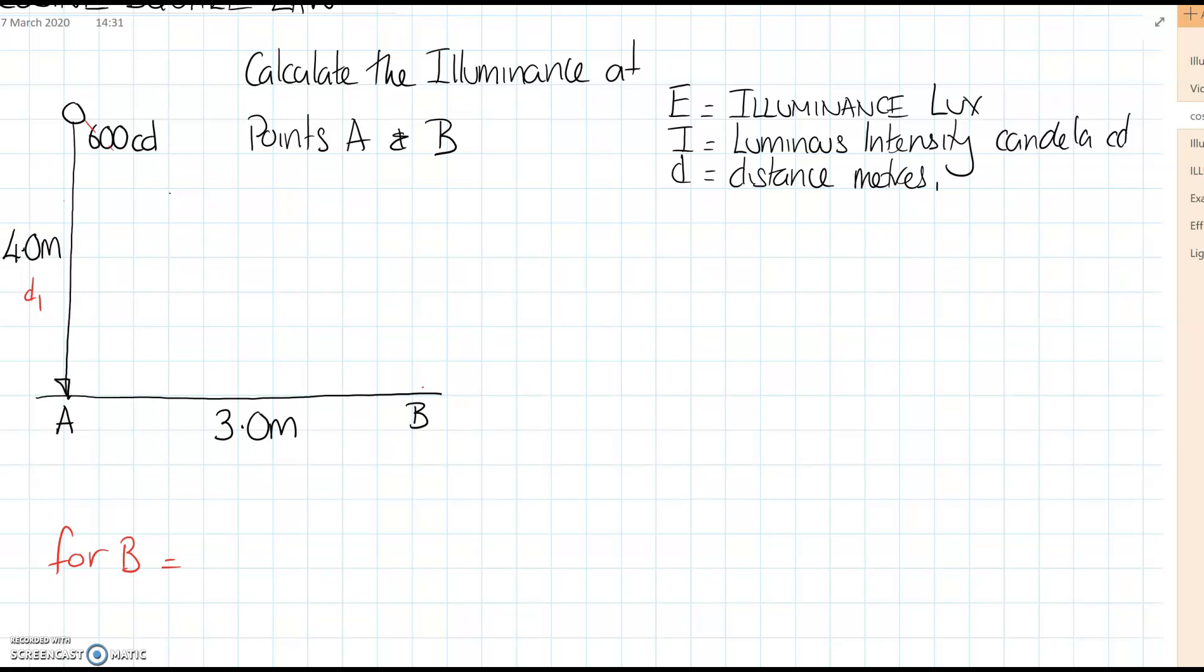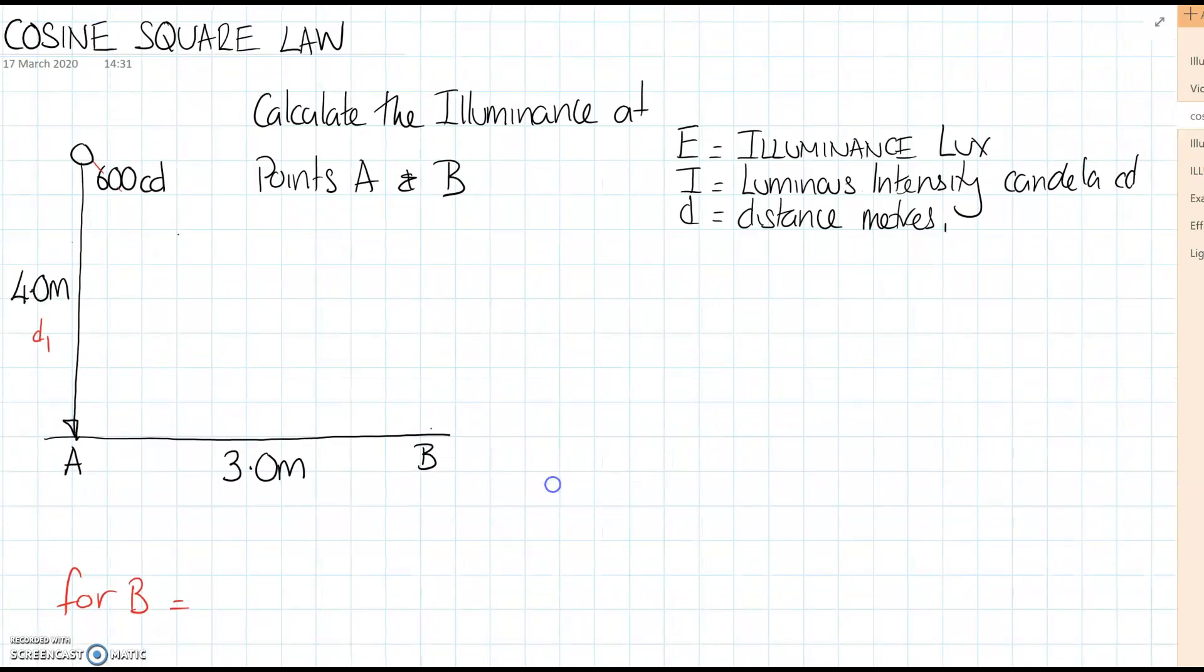In the last video we looked at inverse square law where we said that the illuminance on a surface - in this case we have a table or could be a floor which is four meters from the surface - suspended is a 600 candela lamp. The candela being the luminous intensity.